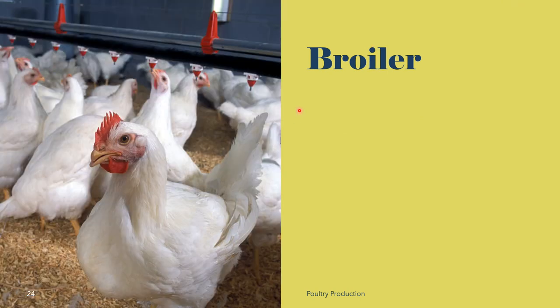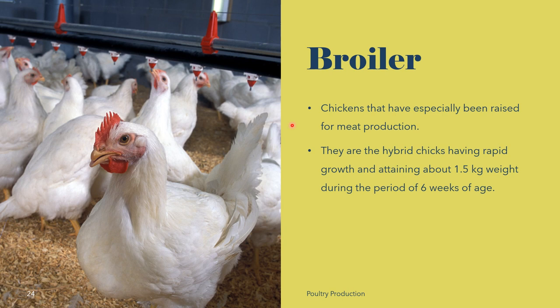We also have broilers. Broilers are chickens that have especially been raised for meat production. They are hybrid chicks having rapid growth and attaining about 1.5 kg weight during the period of 6 weeks of age. Broilers, sometimes termed fryers, are immature young chickens of either sex with tender meat, soft, pliable, smooth-textured skin, and flexible breastbone cartilage of about 6 weeks of age.